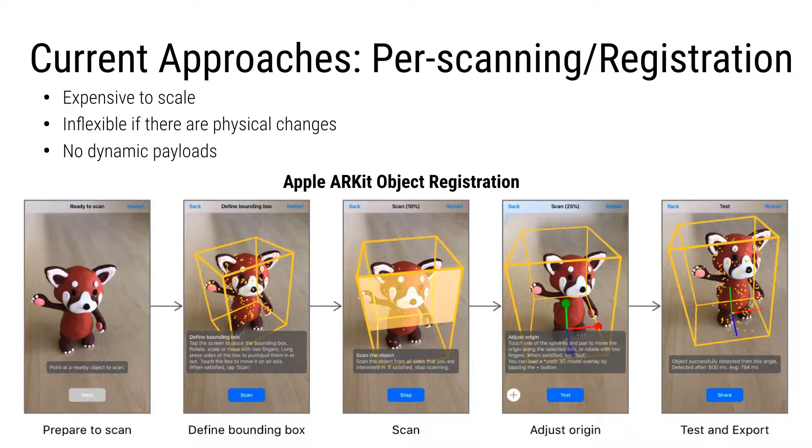For example, large QR codes on trains that transmit the schedules, or Aruco codes in art galleries to act as fiducial anchors for image overlays. Apart from being visually obtrusive, these tags can only transmit a fixed data payload. Alternatively, other markerless strategies require pre-registration of scenes and objects, and also do not support the ability to transmit any dynamic information. For example, this is Apple's ARKit object registration process. You can imagine how time-consuming and cumbersome it will be to register every object in the real world.